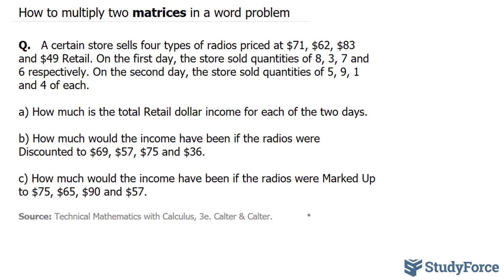So that can be shown as $71, $62, $83, and $49. And for each of the days, we can represent them as column vectors.